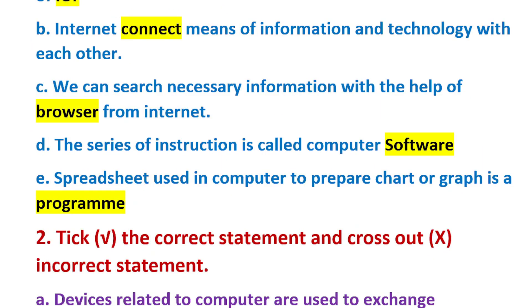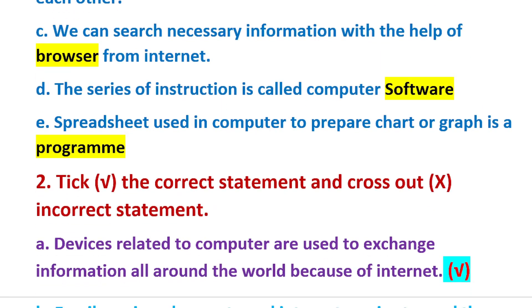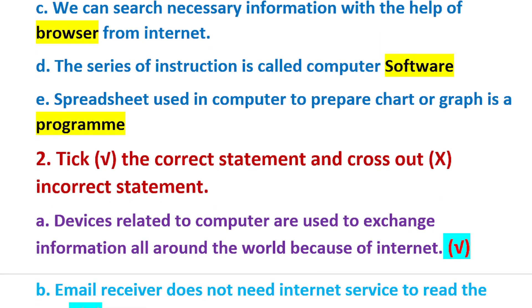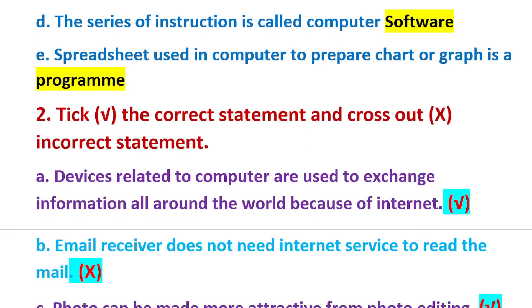Question 2: Tick the correct statement and cross out the incorrect statement. A) Devices related to a computer are used to exchange information all around the world because of the Internet. That is correct.